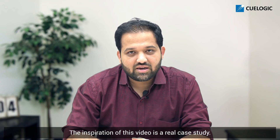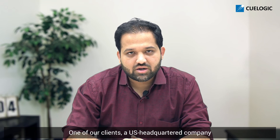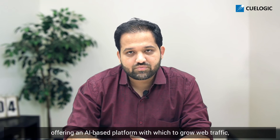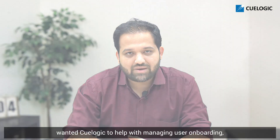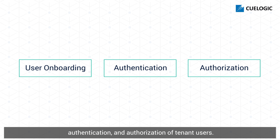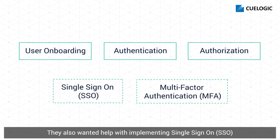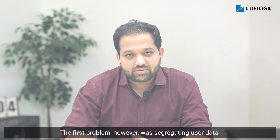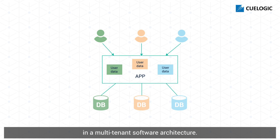The inspiration of this video is a real case study. One of our clients, a US headquartered company offering an AI platform to grow web traffic, wanted Qlogic to help with managing user onboarding, authentication, and authorization of tenant users. They also wanted help with implementing single sign-on and multi-factor authentication. The first problem, however, was segregating user data in a multi-tenant software architecture.